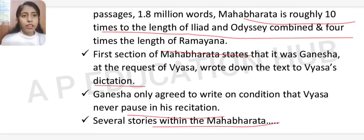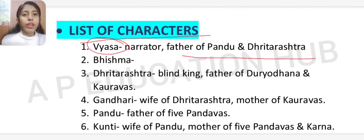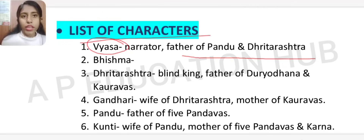Now let's discuss the list of characters of the Mahabharata. The first character is Vyasa, the narrator of the epic and the father of Pandu and Dhritarashtra. Next is Bhishma Pitama. Then Dhritarashtra, who is the blind king and the father of Duryodhana and the Kauravas — he had a total of 100 sons.